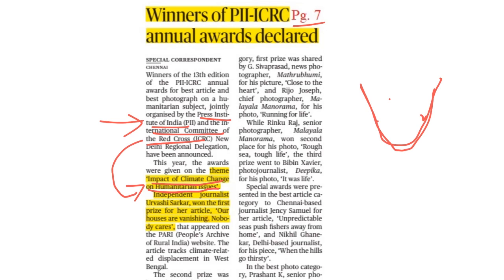Next, a journalism award related to climate change and humanitarian crisis. The theme is the impact of climate change on humanitarian issues. The award is given by the Press Institute of India and the International Committee of Red Cross. The first prize winner is independent journalist Urvasi Sarkar, for a story titled 'Our Houses Are Vanishing.'